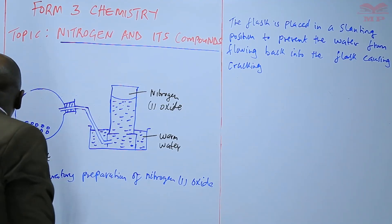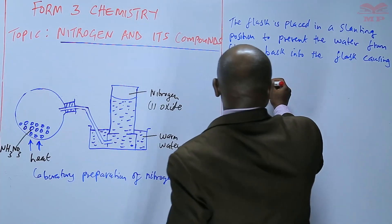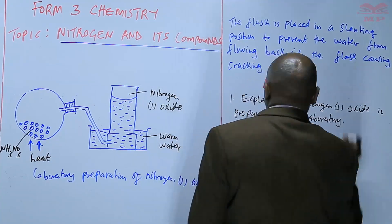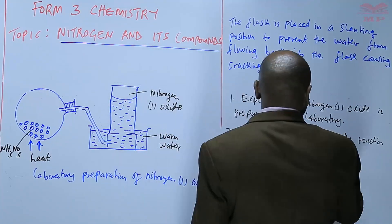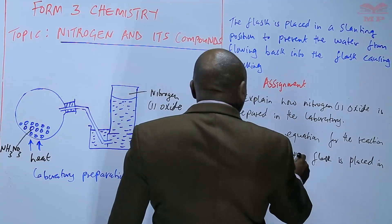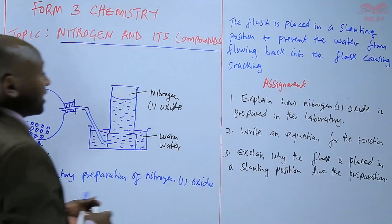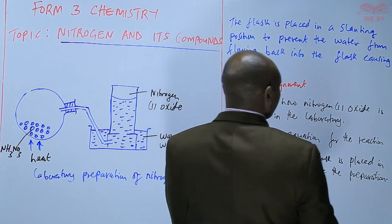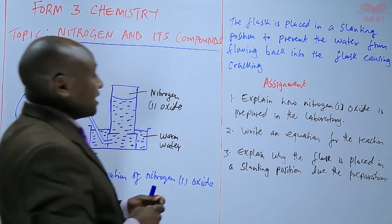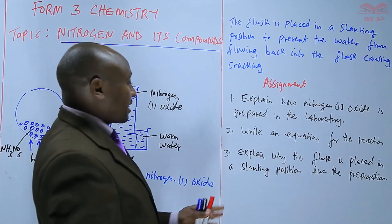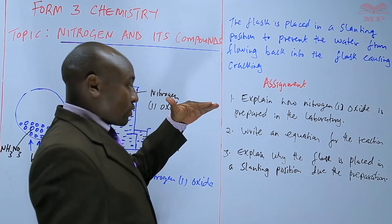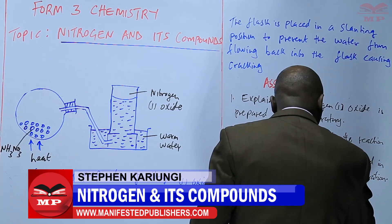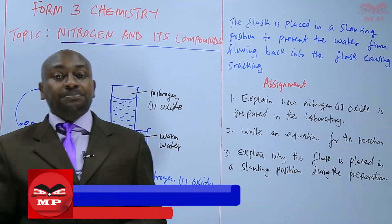We are going to have an assignment on nitrogen one oxide. The assignment: one, explain how nitrogen one oxide is prepared in the laboratory; two, write an equation for the reaction; and three, explain why the flask is placed in a slanting position during preparation. We'll stop there until next time. Goodbye.